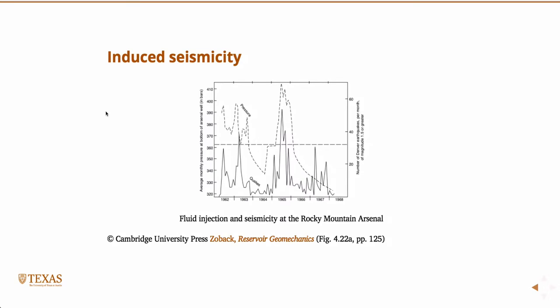And the reason we care about this, with respect to petroleum engineering applications, is induced seismicity. And so we hear about it a lot now due to wastewater injection in Oklahoma and the Barnett Shale and other things that are causing earthquakes. But it's actually been known for a long time. It's an old problem. So this is actually fluid injection and seismicity at Rocky Mountain Arsenal. So this is in the 60s, from 1961 to 68, and plotted on this axis is injection pressure, the bottom hole pressure. So this is this dashed line. And then plotted over here is the number of earthquakes per month.